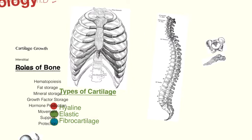Next up, we're looking at the cartilage in the rib cage as well as between the vertebrae of the spinal column. We look at hyaline cartilage when talking about the rib cage — it completes and allows our ribs to meet at the sternum or the manubrium of the sternum. This is the cartilaginous component of the human rib cage.